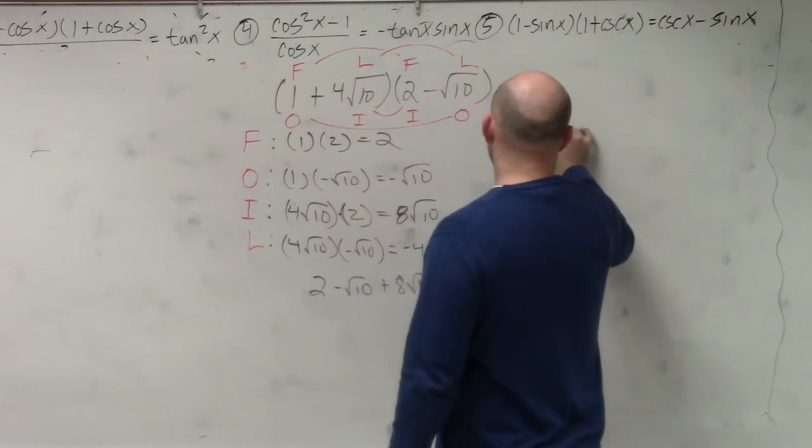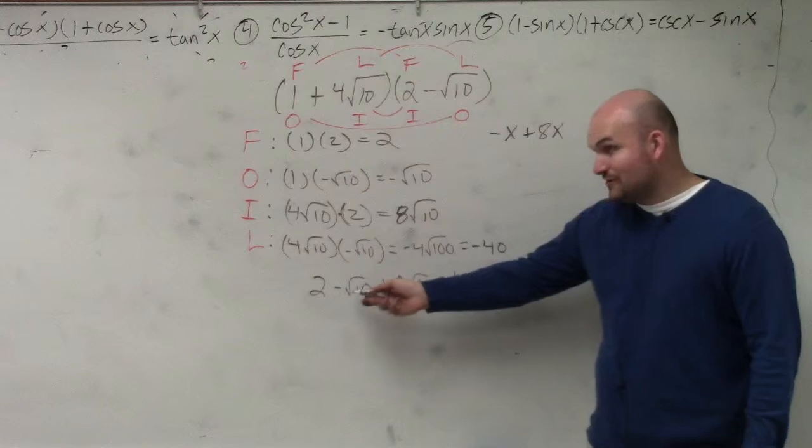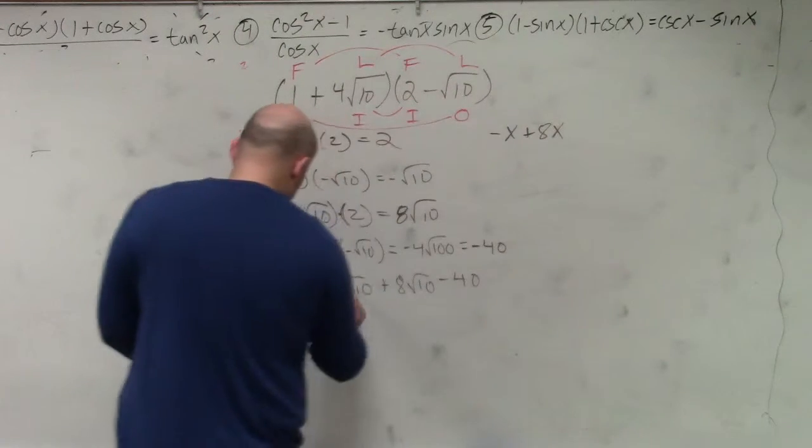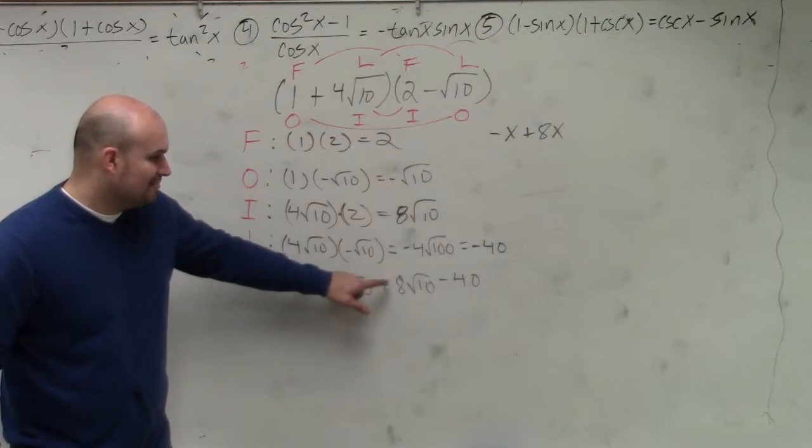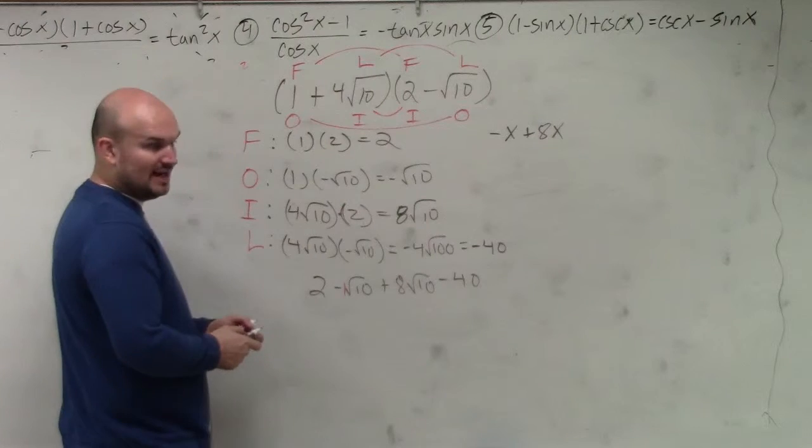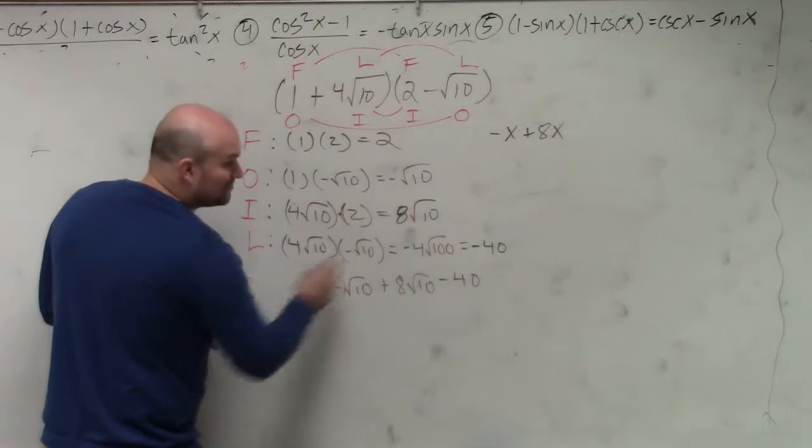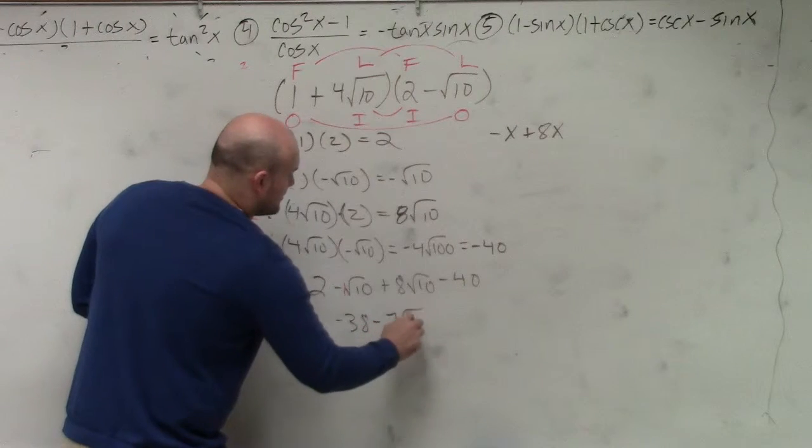Negative x plus 8x would give you 7x. So therefore, this is technically like a 1 here, right? So that's like negative 1 square root of 10 plus 8 square root of 10 would be 7 square root of 10. And then 2 plus negative 40 is negative 38 minus 7 square root of 10.